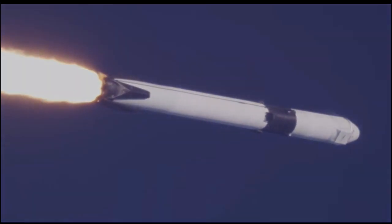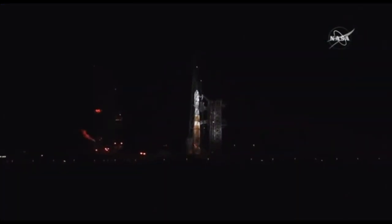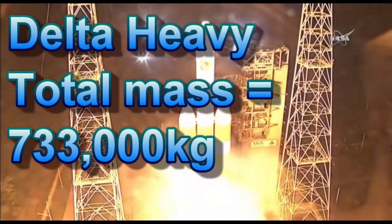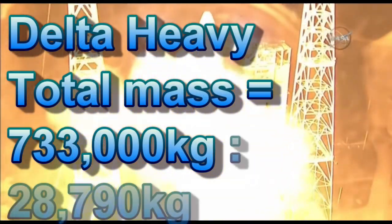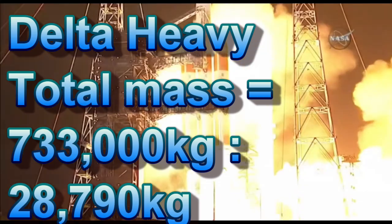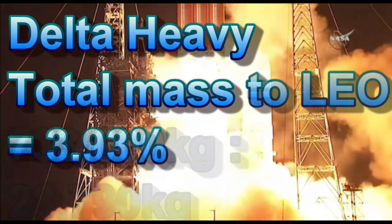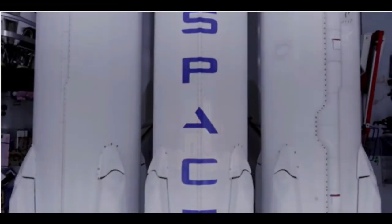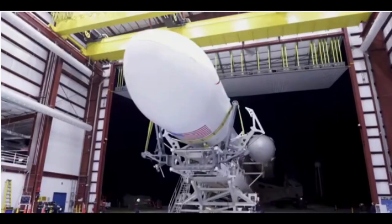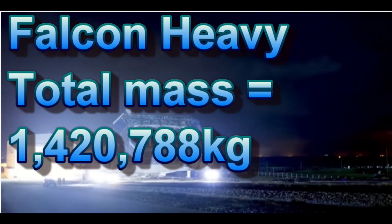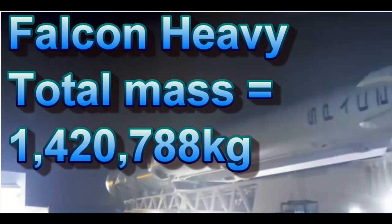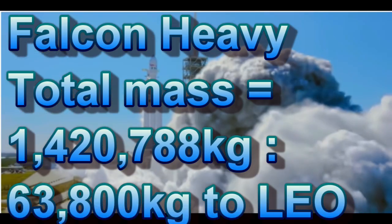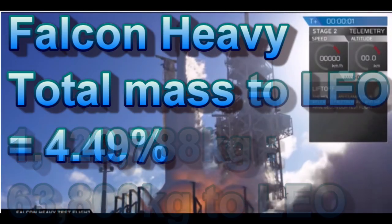The Delta Heavy is the most powerful hydrogen-fueled rocket in use today. It has a mass of 733,000 kilograms at liftoff and can get 28,790 kilograms into low Earth orbit. This gives us 3.93 percent mass to orbit. The SpaceX Falcon Heavy is the most powerful RP-1 rocket in operation today. It has a mass of 1,420,788 kilograms and can get 63,800 kilograms to low Earth orbit. This gives us 4.49 percent mass to orbit.